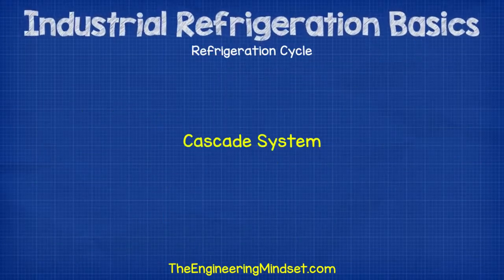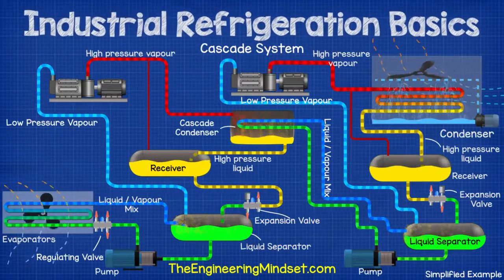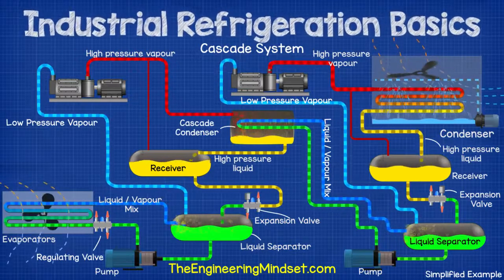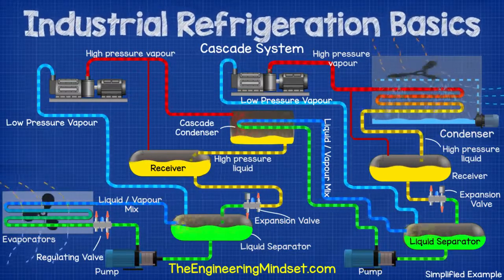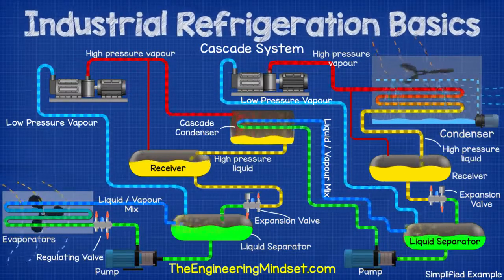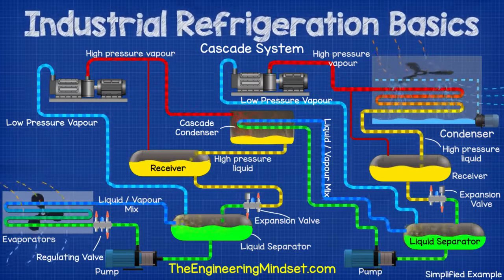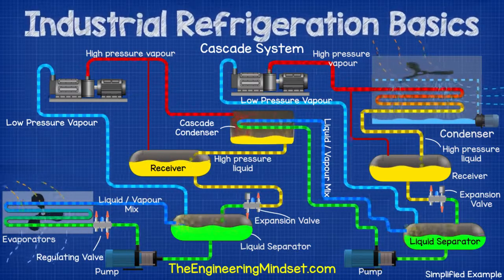Cascade. This is the most advanced system and these systems can become very complex. It's suitable for refrigeration systems which require different temperature ranges for the cooling loads, and also makes it easier and cheaper to comply with health, safety, and environmental regulations.